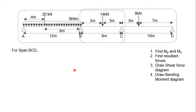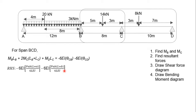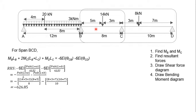Next we do span BCD. You apply the same formula again, but do take note that the alphabets have changed. Left hand side — same formula. But since we are taking span BCD, the moment will be at B, so there will be a 0 here. The answer is 8MB + 36MC. For the right hand side, because there's no uniform load and there's only one concentrated load on each span, only two formulas are needed. Sub in the values and you get negative 626.85 — that's equation 2. So you have equation 1 and equation 2; using simultaneous equations you can find MB and MC.